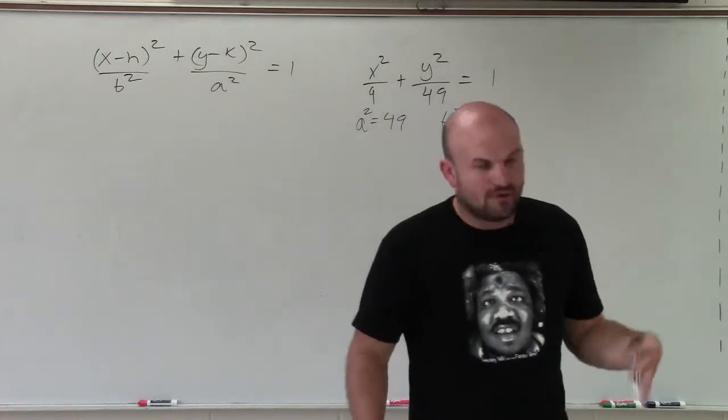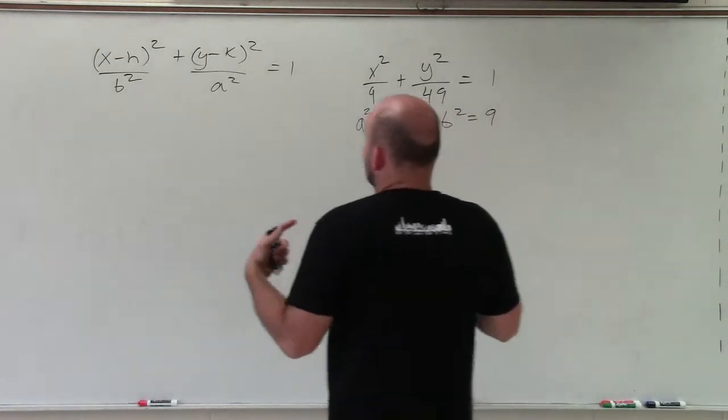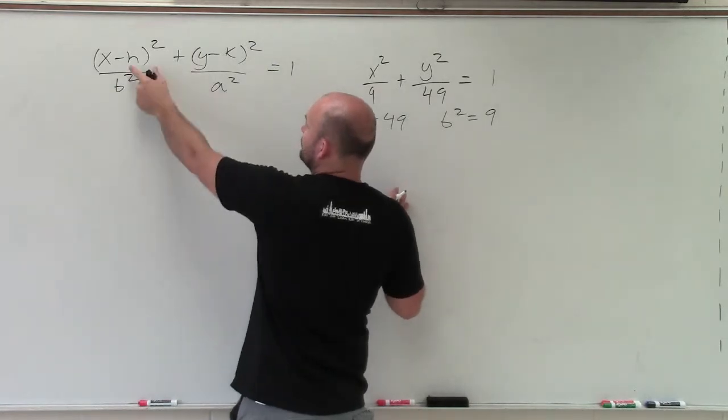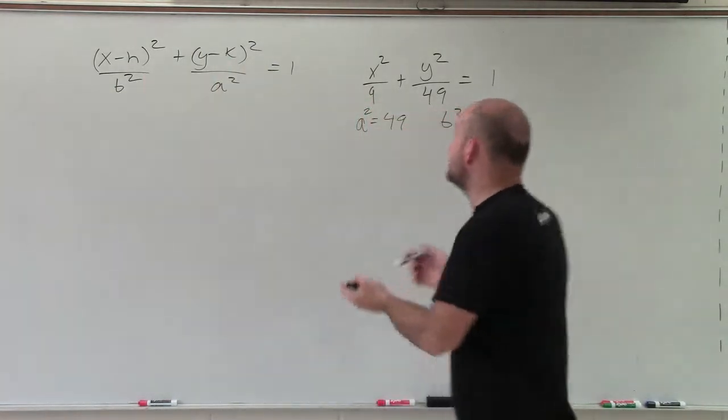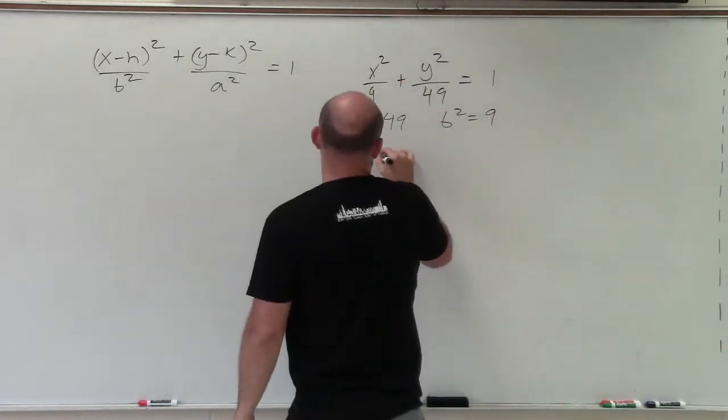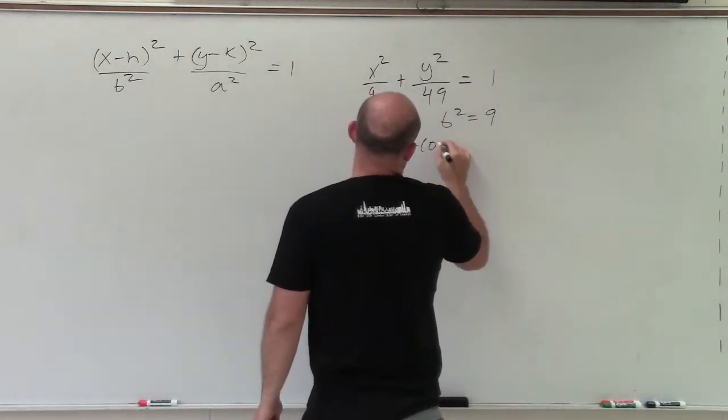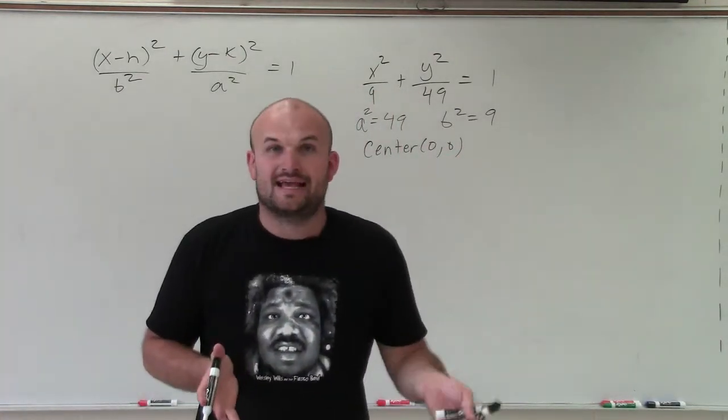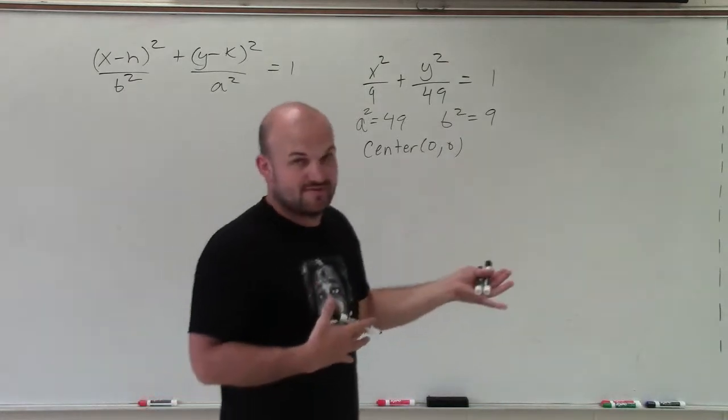So what's important about writing that general form is not only do I know what a and b are, but I also know that h and k represent where the center is going to be. And since in this equation I don't have an h and a k, I can also say that my center is at 0 comma 0. Now, what is important besides figuring out a and b? Well, what's the values of a and b?